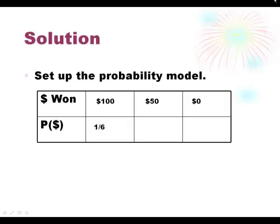If we don't get a 6 the first time, we want to get a 6 the second time to win $50. So that would be a 5 out of 6 chance times a 1 out of 6. You didn't get it first but you did get it second. 5 out of 6 times 1 out of 6, which is 5 out of 36.